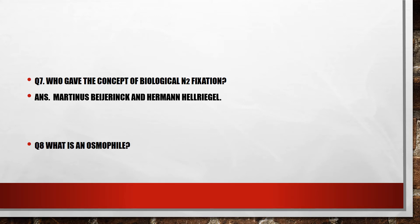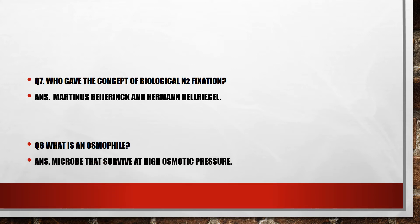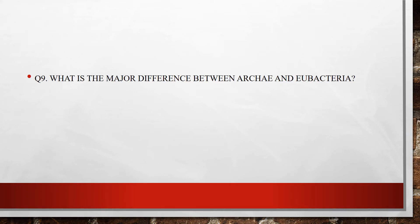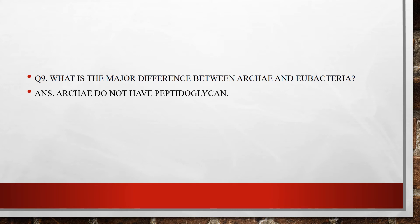Eighth question: what is an osmophile? The answer is microbes that survive at high osmotic pressure. Ninth question: what is the major difference between RK and U bacteria? The answer is that RK bacteria do not have peptidoglycan in their cell wall.